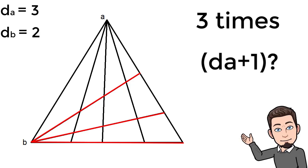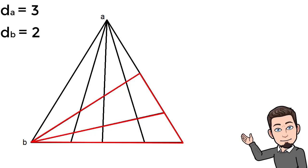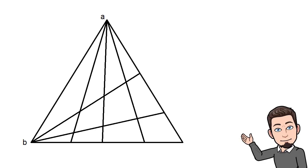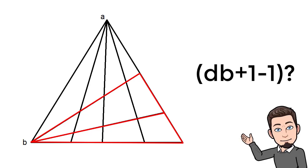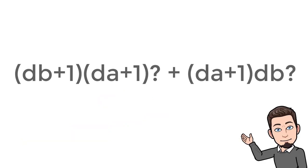We still have to count what we call the 'para triangle.' For this kind of triangle, the number of triangles is equal to the number of segments crossing the triangle plus the original base. In our example, the crossing segments are the da segments. The number of para triangles that exist is equal to (db)? — that is, db question mark.